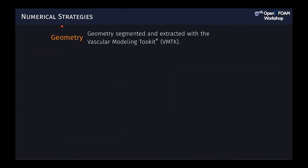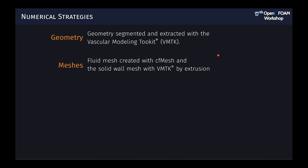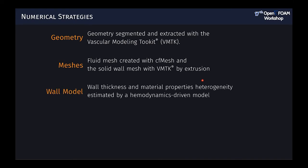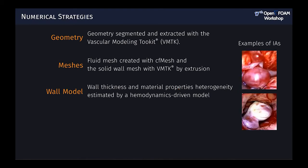For geometry extraction we used the Vascular Modeling Toolkit, which specializes in extracting surface models from medical images. From the surface model we built the fluid mesh with cfMesh and the solid wall was created with the MTK2 by extruding it outward using a thickness field computed by a wall model accounting for heterogeneity in thickness and material properties. Real aneurysm walls are heterogeneous — thinner red patches where blood is visible through the wall, and thicker whitish-yellowish patches indicating atherosclerosis, which are also stiffer.